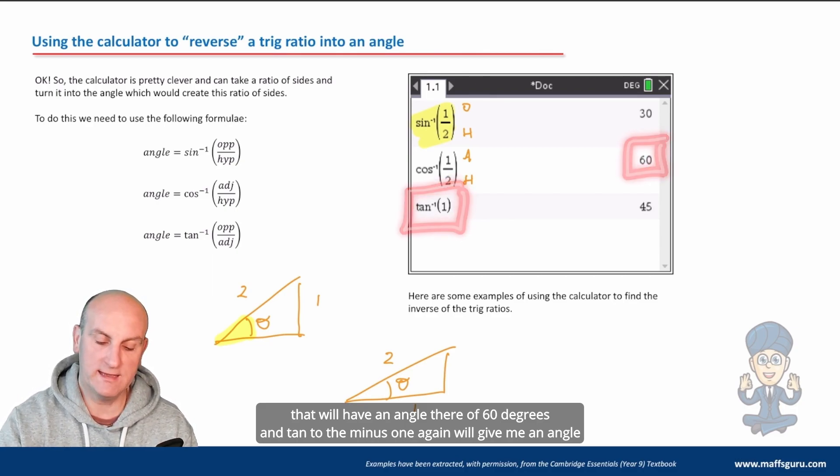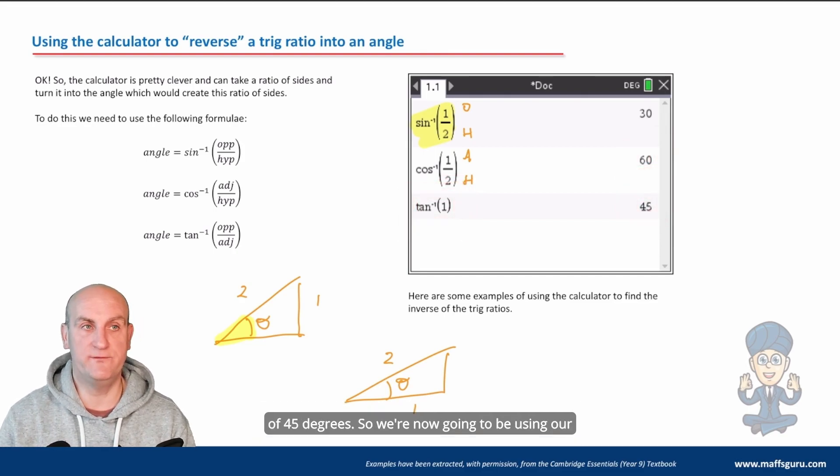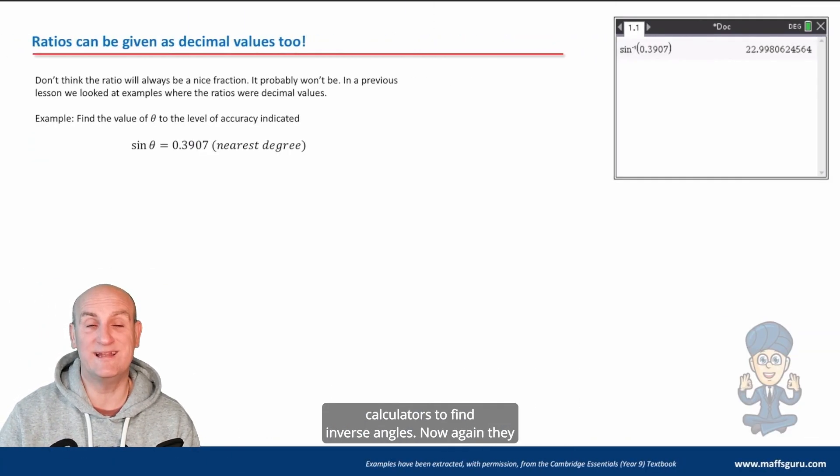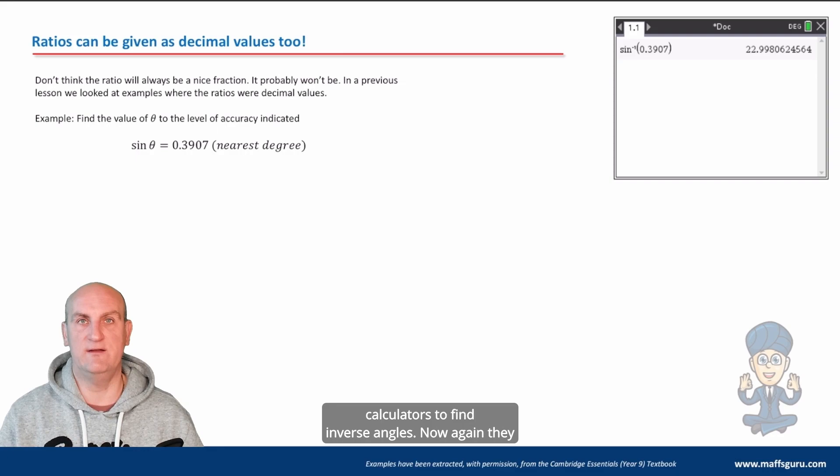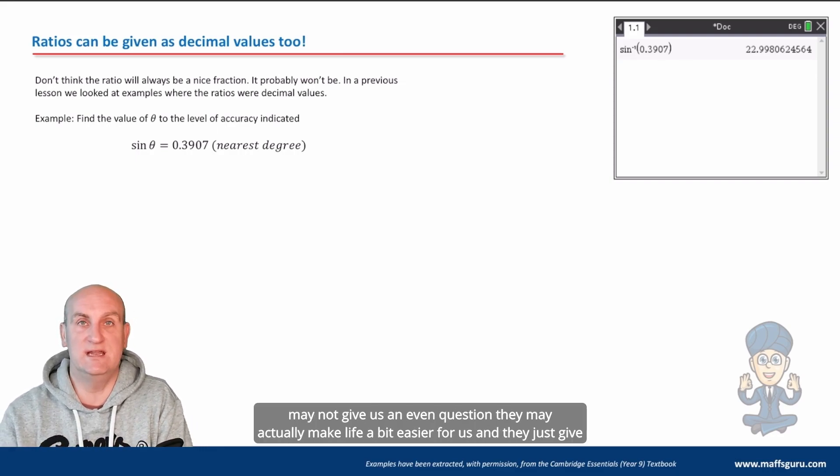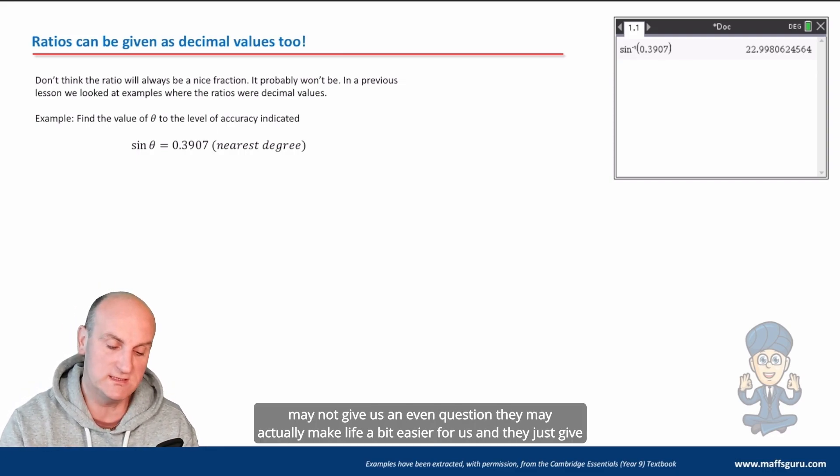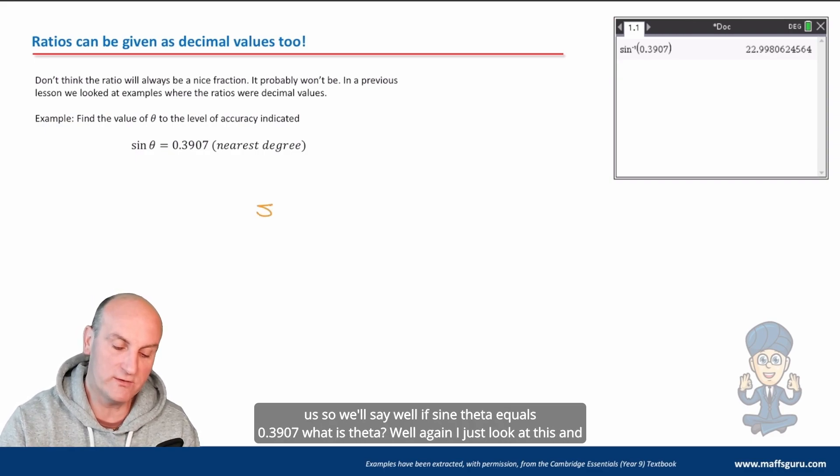And tan to the minus one, again, will give me an angle of 45 degrees. So we're now going to be using our calculators to find inverse angles. Now, again, they may not give us an even question. They may actually make life a bit easier for us. And they just give us, so we'll say, well, if sine theta equals 0.3907.